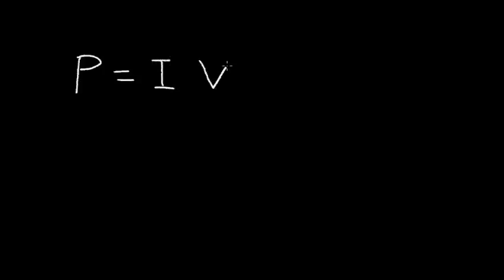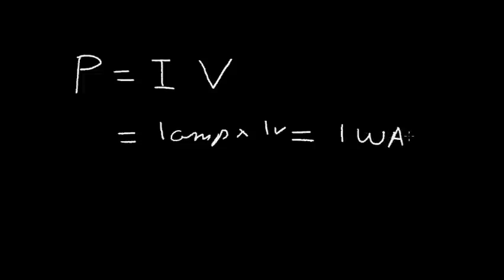There's a simple equation to calculate the power dissipated by this resistor: P for power is equal to the current flowing through the resistor times the voltage across the resistor. In our simple example, the power would be 1 amp times 1 volt, equal to 1 watt of power dissipation in the resistor. So if we wanted to go to our local electronics store and buy a resistor for this circuit, we would know it needs to dissipate 1 watt. We want to buy at least a one-watt resistor. If we bought a quarter-watt resistor by mistake, it could easily burn up.